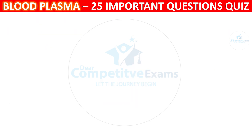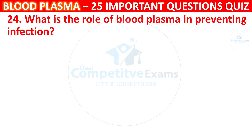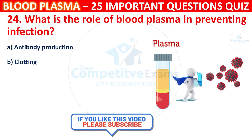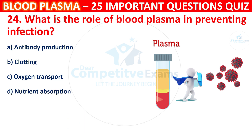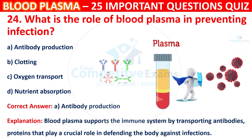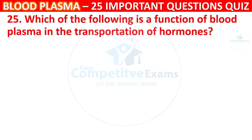Question 24: What is the role of blood plasma in preventing infection? Your options are Antibody production, Clotting, Oxygen transport, or Nutrient absorption. The correct answer is A, i.e. Antibody production. Blood plasma supports the immune system by transporting antibodies, proteins that play a crucial role in defending the body against infections.